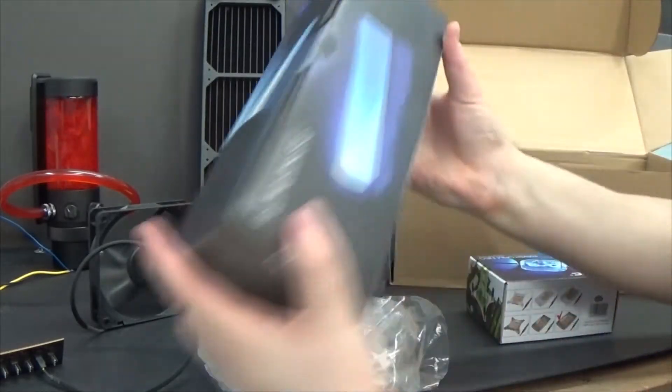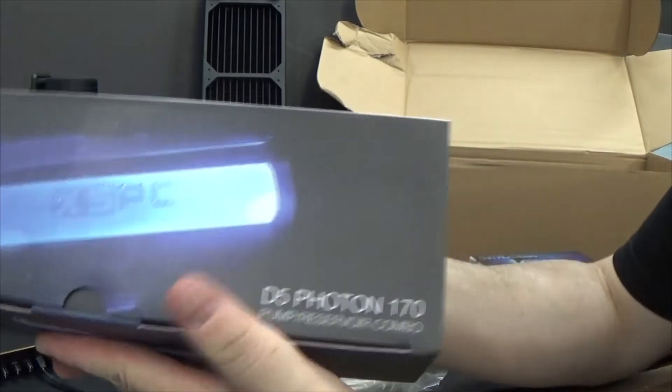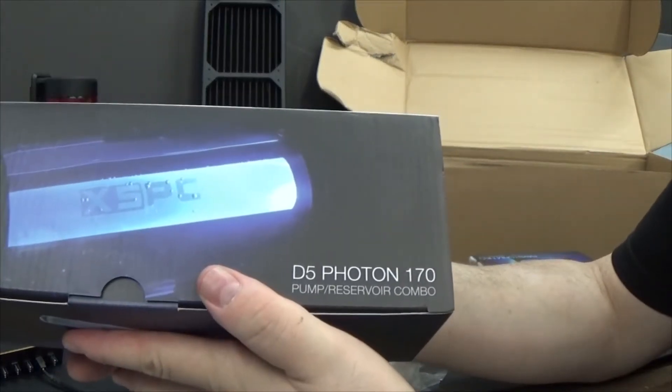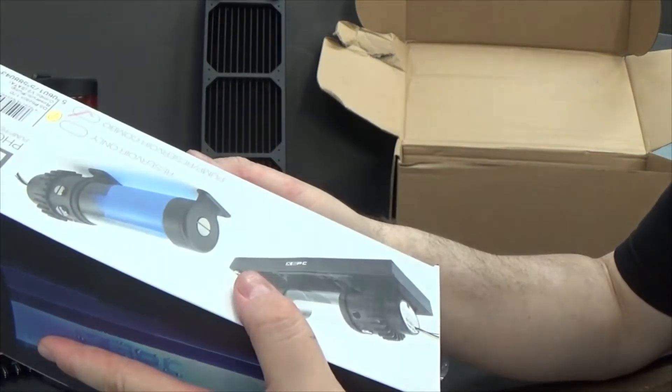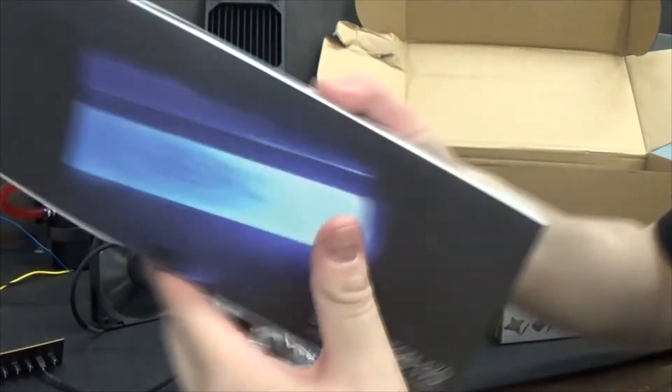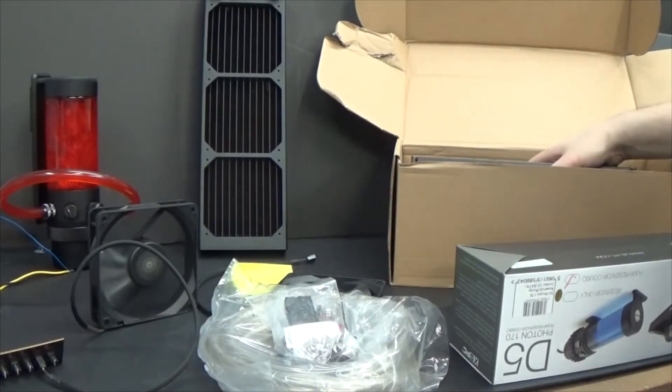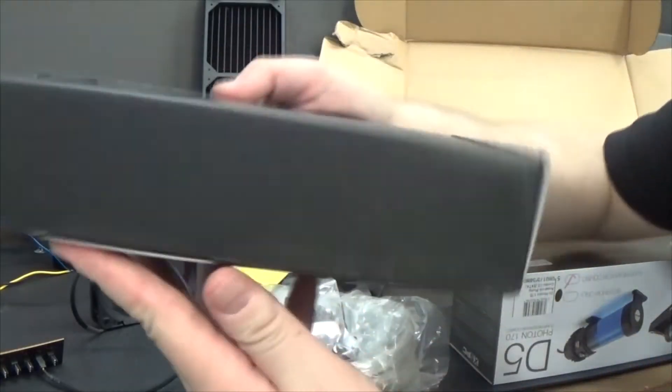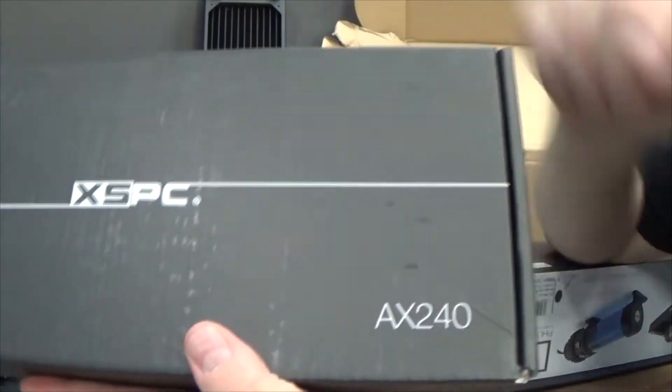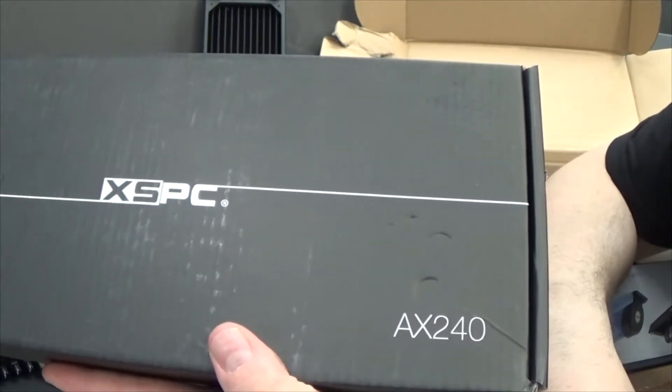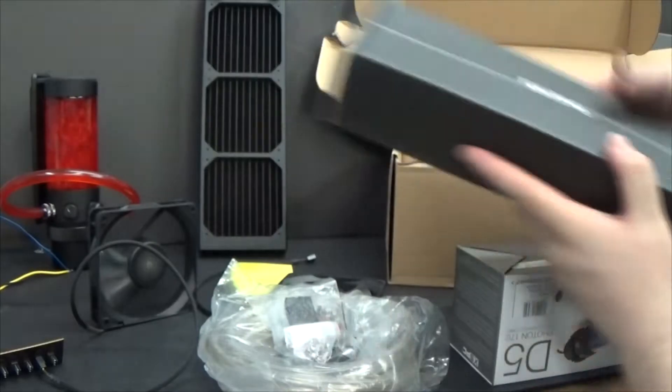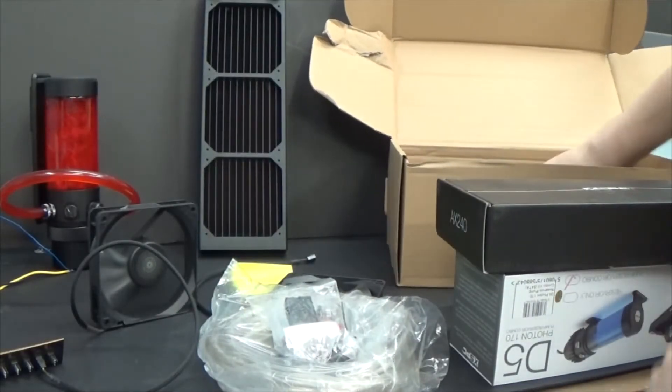Okay, here's your Photon 170 beautiful res. Radiator, reservoir! Wow, I just said radiator. It's a reservoir guys. I believe it comes with a glass tube and you are getting the AX240. You're not even getting the cheaper EX version from XSPC. Of course, full color manual.